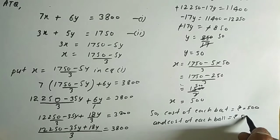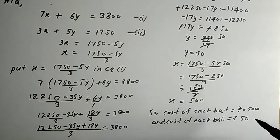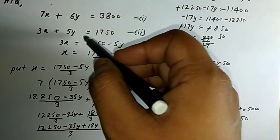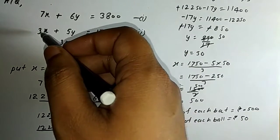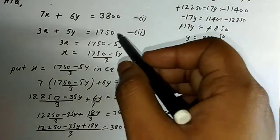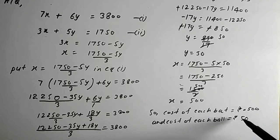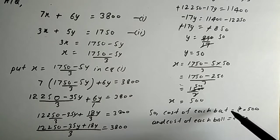So the cost of each bat is equal to Rs.500 and the cost of each ball is equal to Rs.50. You can verify the answer by putting these values into the given conditions. For example, 3 bats and 6 balls: 3×500 + 6×50 = 1500 + 300 = 3800, which satisfies both equations. So our answer is completely correct.